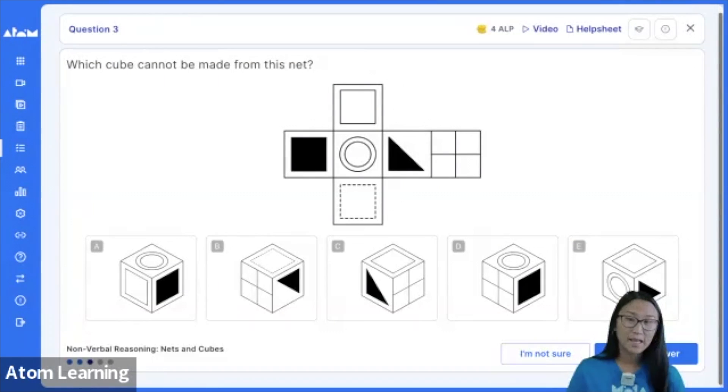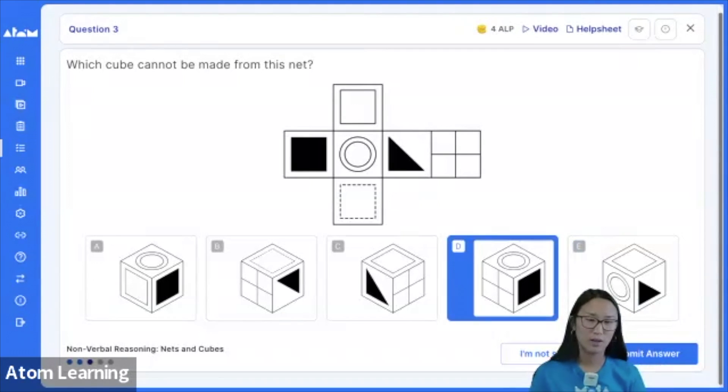Which cube cannot be made from this net? So cannot. Here are our results. So we have 50% of the vote going for D. Let's have a look.